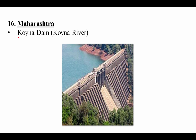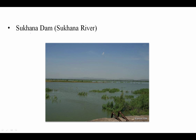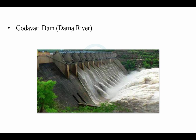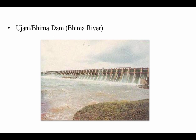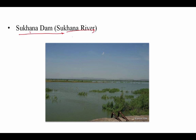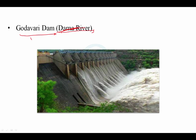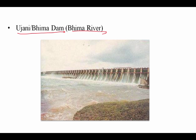From Maharashtra: first is Koyna Dam on the Koyna river. Second is Sukhna Dam on the Sukhna river. Third is Godavari Dam — since the Godavari originates from Maharashtra, this dam is also in Maharashtra, on the Dharna river. Fourth is Bhima Dam, also called Ujani Dam, on the Bhima river. So four names from Maharashtra: Koyna, Sukhna, Godavari, and Bhima.